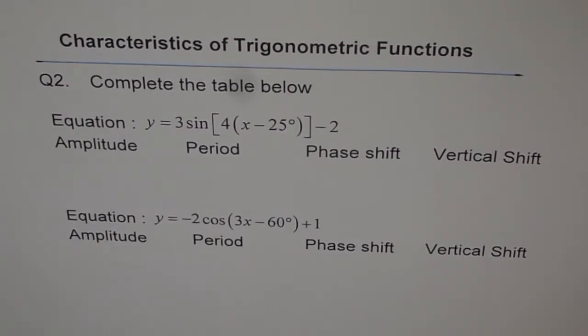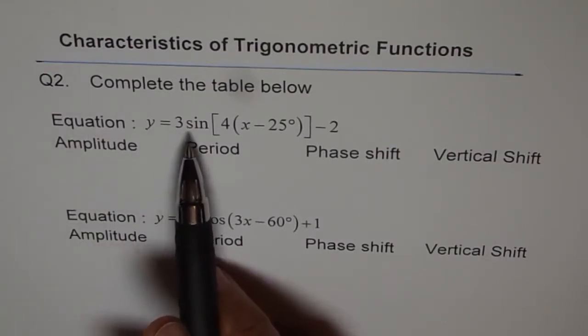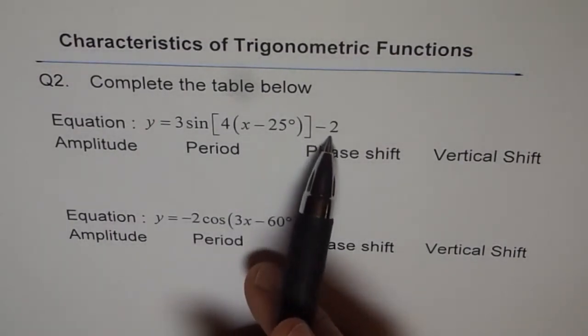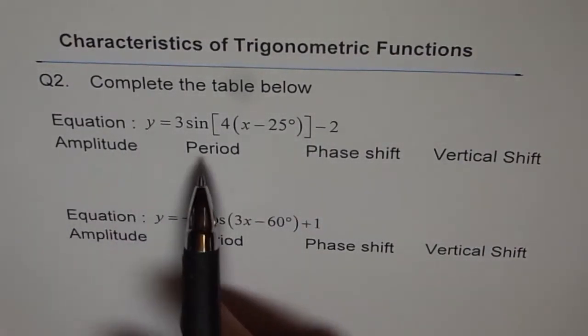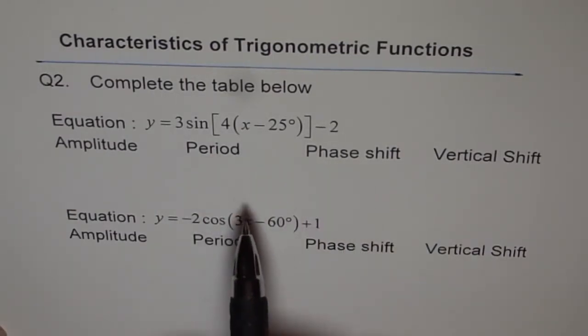So here we are trying to really understand the equation and write down its characteristics. Now the equation given to us is y equals 3 sine of 4 times x minus 25 degrees minus 2. We need to find the amplitude, period, phase shift, and vertical shift for this particular function.